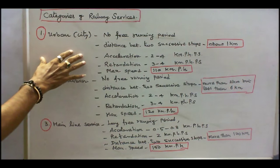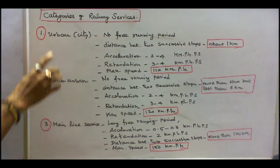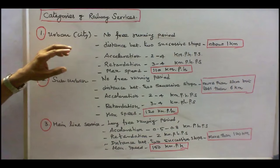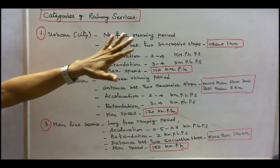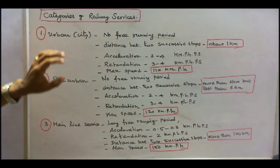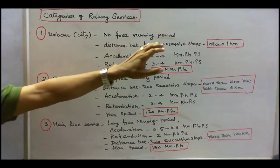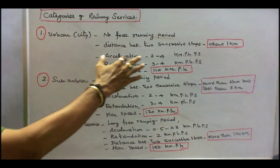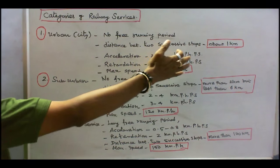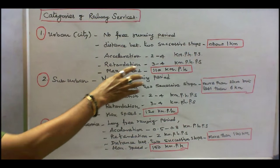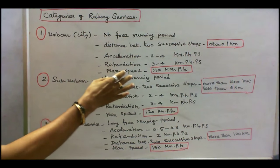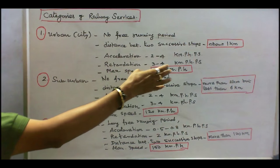Categories of railway services are: (1) Urban, (2) Suburban, and (3) Mainline. In urban service, there is no free running period. The distance between two successive stops is about 1 km. Acceleration is 2 to 4 km/h/s, retardation is 3 to 4 km/h/s, and maximum speed is 40 to 60 km/h.